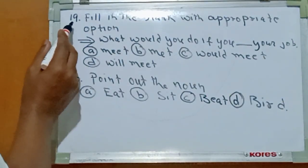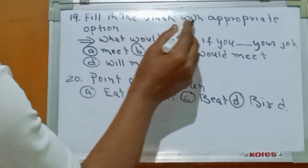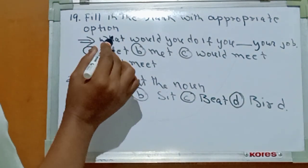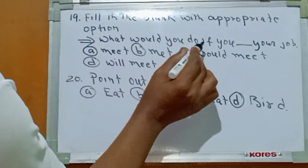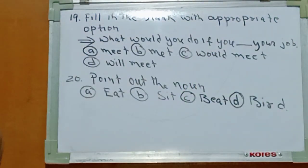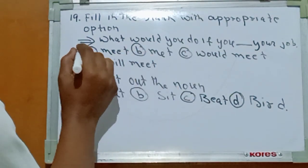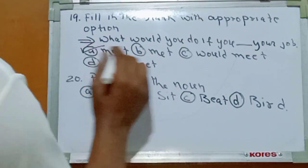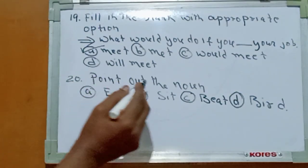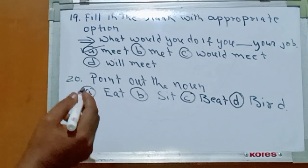Number nineteen: fill in the blank with the appropriate option. The sentence is: what would you do if you dash your job? The right answer is: lost. What would you do if you lost your job?